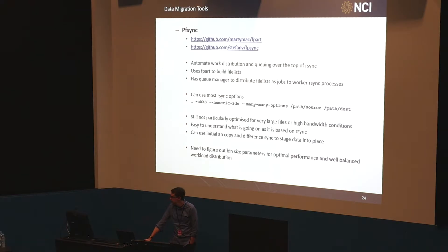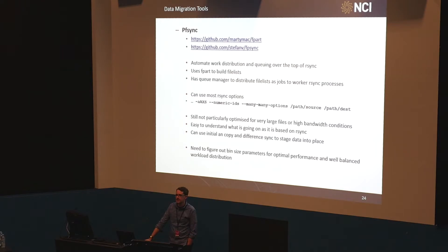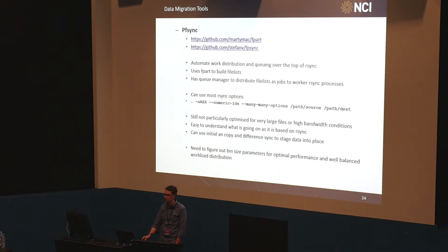The other option, which Phil mentioned in his presentation, is FPSync, which has some automation - it builds file buckets and has its own queue manager to dispatch tasks to waiting processes on nodes over PBS. Underneath it is still using rsync, which is both a good and a bad thing: it means you can feed it any of your normal rsync options. However, one issue is the way rsync writes a file and then swaps it in. You can avoid that with the --in-place option, but --in-place is not compatible with sparse files. In HPC you tend to encounter sparse files, so you have to run without --in-place, which causes a large number of rename operations.